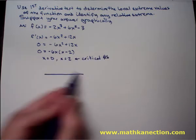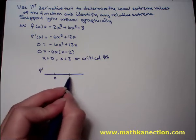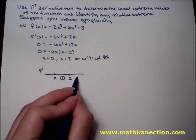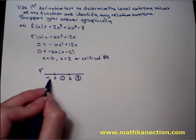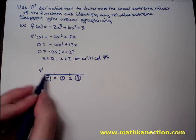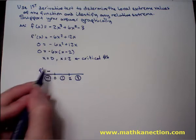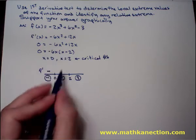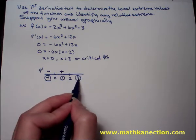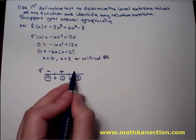We make our f prime number line and place the critical numbers on it, then pick test numbers in each section: using -1, 1, and 3. Taking those test numbers and substituting into the derivative — factored form is easier. Plugging in -1, f prime is negative. Plugging in 1, f prime is positive. Plugging in 3, f prime is negative.